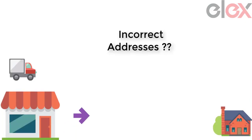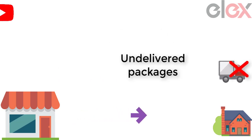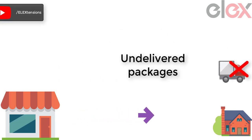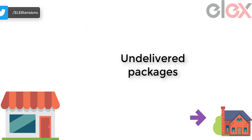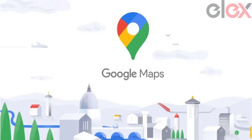Are you incurring losses due to incorrect addresses entered by customers, leading to undelivered packages? Are you tired of contacting customers to get the address corrected? Google has made our lives easier by creating many applications, one of them being Google Maps. Google has a Places Library in the Google Maps JavaScript API.